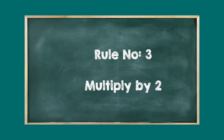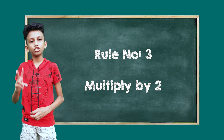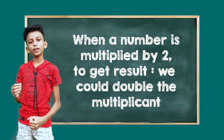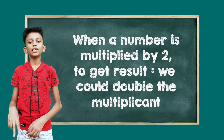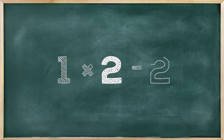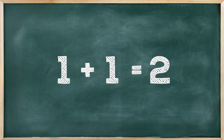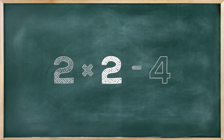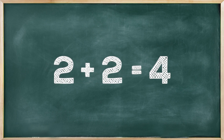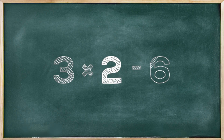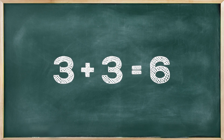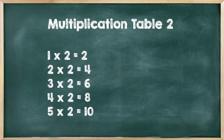Next, rule number 3: Multiplying by 2. When a number is multiplied by 2, to get the result, we could double the multiplicand. 1 times 2 is 2 — that means double the multiplicand 1. 2 times 2 is 4 — that means double the multiplicand 2. 3 times 2 is 6 — that means double the multiplicand 3. Like that, we can make the multiplication table of 2.